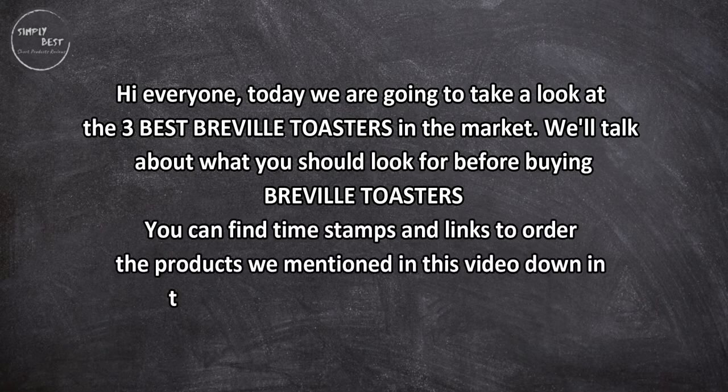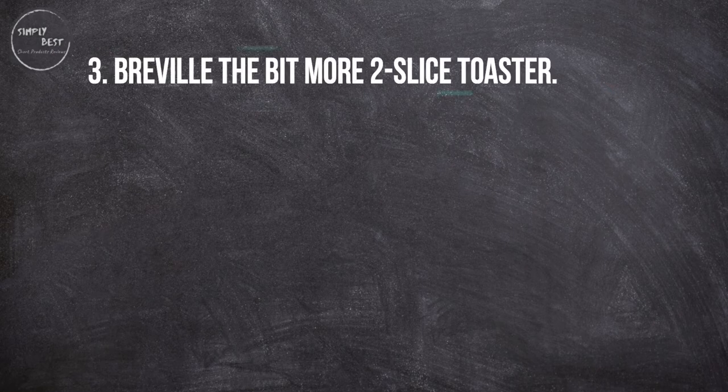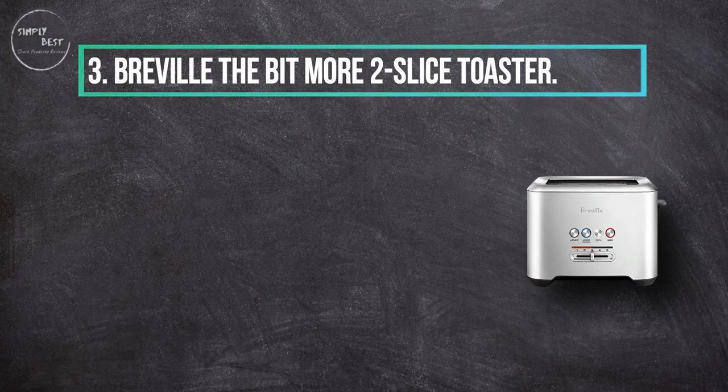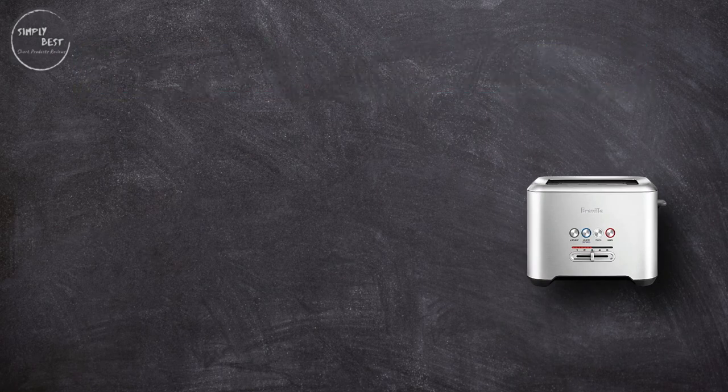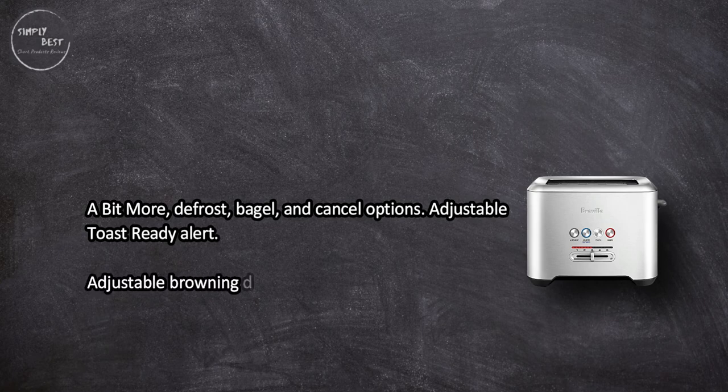You can find timestamps and links to order the products we mentioned in this video down in the description below. Let's get started. At number three, Breville the Bit More two-slice toaster. A Bit More, defrost, bagel, and cancel options, adjustable toast ready alert, adjustable browning dial with LED progress bar.